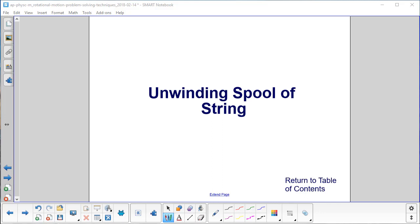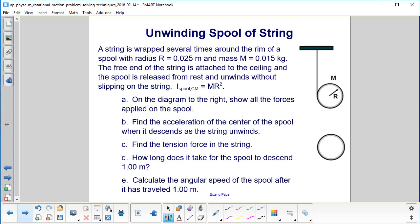Unwinding spool of string. We have a spool of string over here. It's wrapped several times around the rim of a spool that has a radius of 0.025 meters and a mass of 0.015 kilograms. The free end of the string is attached to the ceiling and the spool is released from rest and unwinds without slipping on the string. We have your moment of inertia of the spool right here.